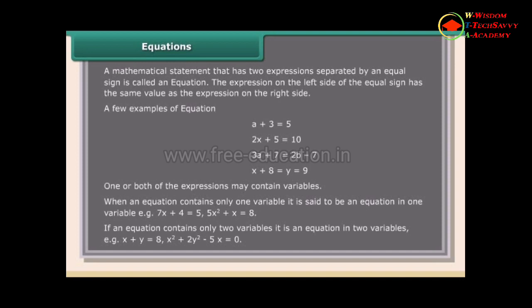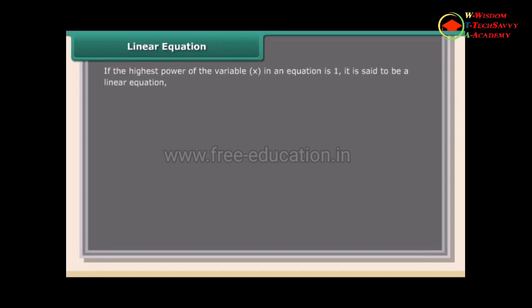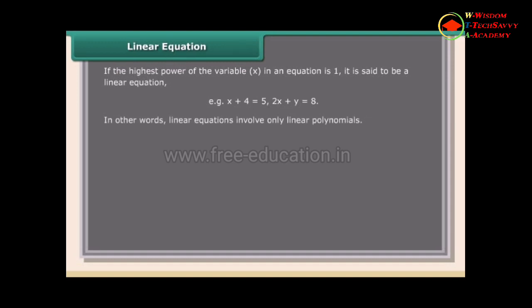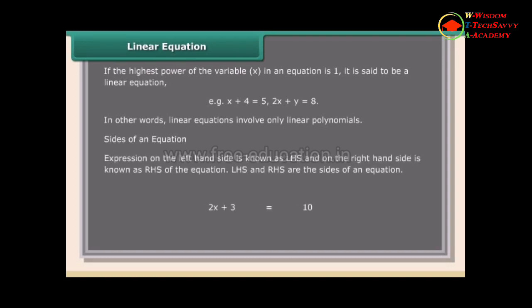A linear equation is one where the highest power of the variable x is 1. For example, x + 4 = 5 or 2x + y = 8. Linear equations involve only linear polynomials. The expression on the left-hand side is known as LHS and on the right-hand side is known as RHS. LHS and RHS are the sides of an equation.